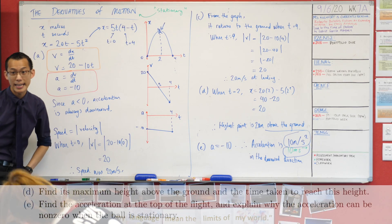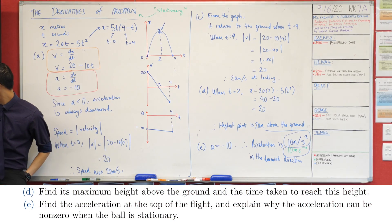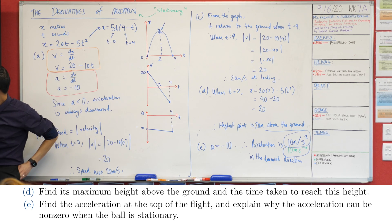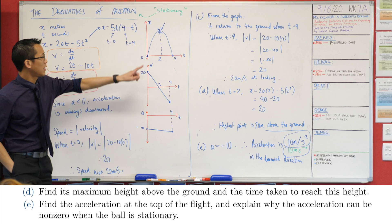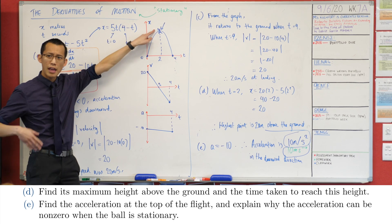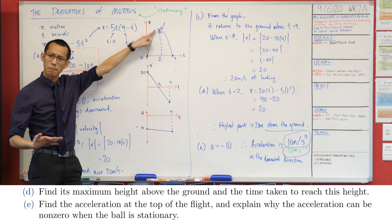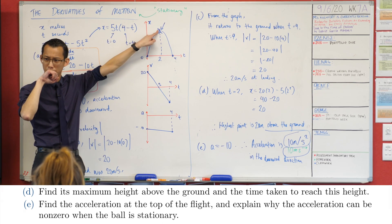I've run out of space, but we have one last question to answer. It says, explain why the acceleration can be non-zero, it's not zero, it's 10 in the downward direction, when the ball is stationary. Like the ball's not moving. How can there be acceleration when the ball's not going anywhere?